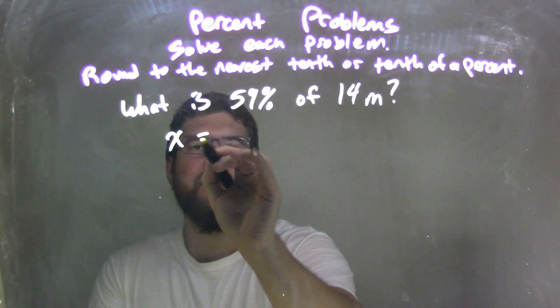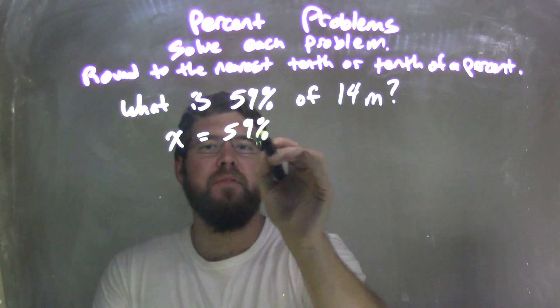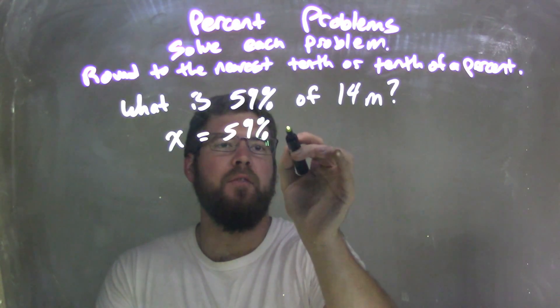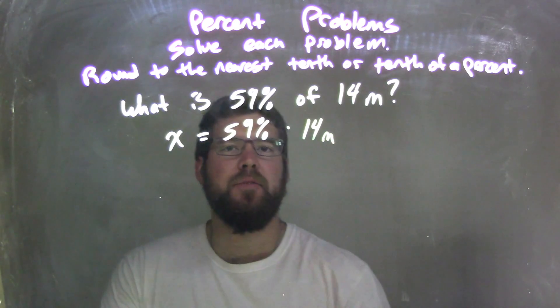Let's take the variable x here. X is 59%—is equal to—59% of, multiplication, 14 meters.